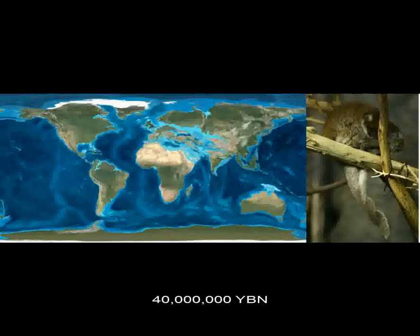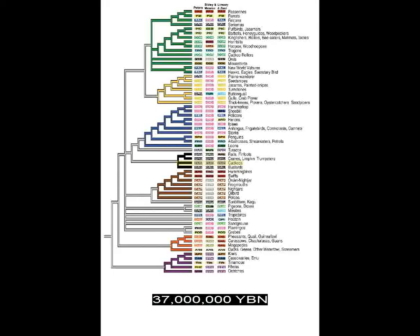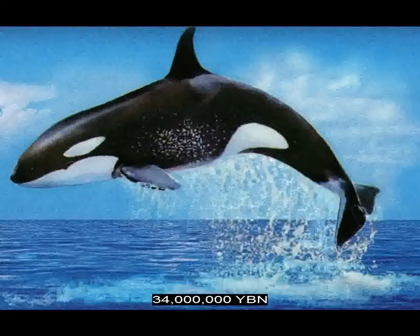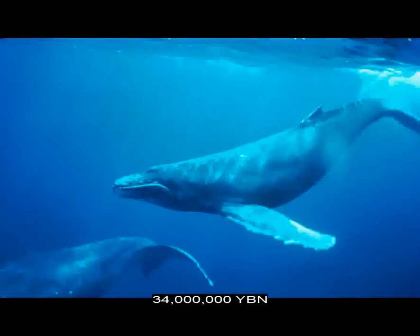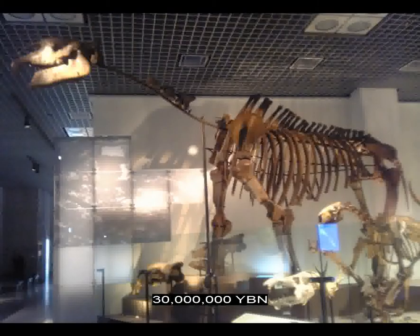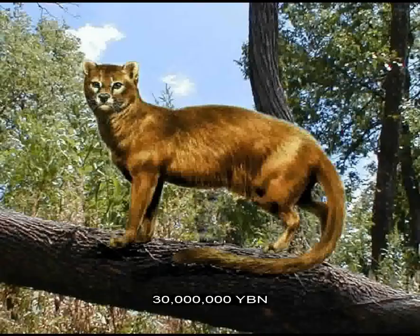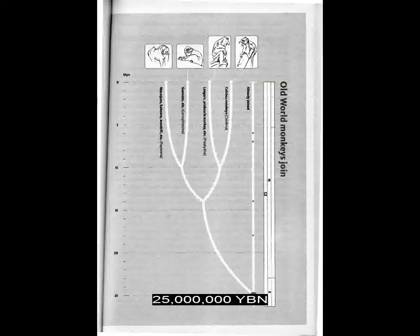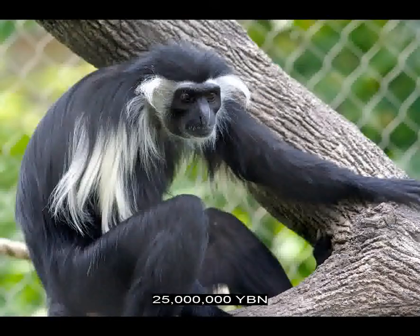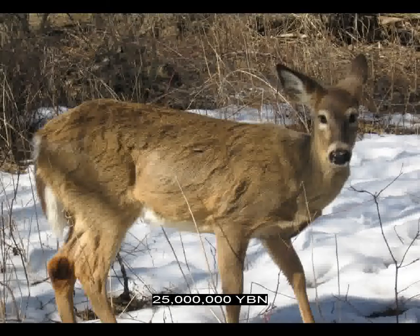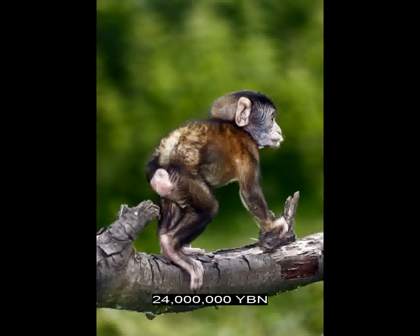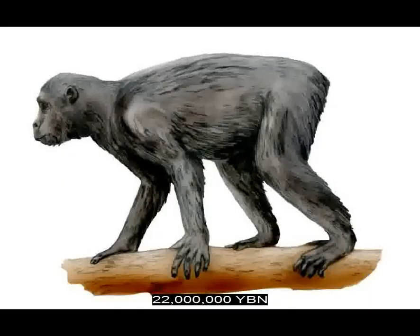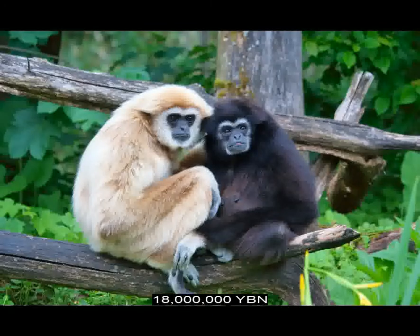Dogs evolve. The birds Cuculiformes evolve—ancestor of cuckoos and roadrunners. Toothed and baleen whale lines split. Toothed whales include dolphins, sperm, and killer whales. Baleen whales include blue, humpback, and gray whales. The largest land mammal ever known: the hornless rhinoceros Paraceratherium lives at this time. Cats evolve. The primates true lemurs evolve. The first pigs evolve. The primates old-world monkeys evolve—ancestor of the macaques, baboons, mandrills, proboscis, and colobus monkeys. The first deer evolves. The ancestor of all hominoids—gibbons and hominids—loses its tail. The monotreme echidna evolves. The monotreme duck-billed platypus evolves. The hominoid Proconsul evolves in East Africa. The hominoids gibbons evolve. The first kangaroos evolve.